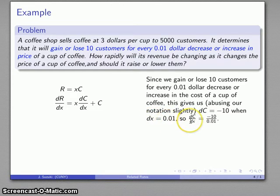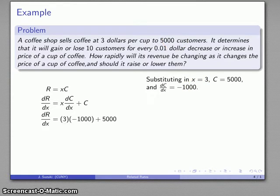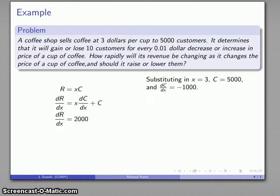So what else do I know? I'm interested at a price of three dollars. I do have five thousand customers. I have dC/dx equals -1000. I can substitute those in and compute dR/dx works out to be 2000.